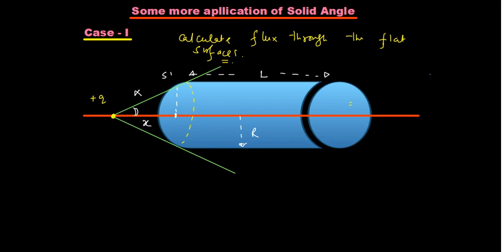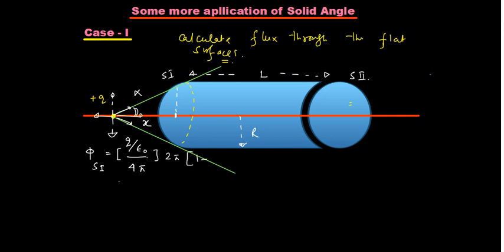This is surface 1 and this is surface 2 — I will come to surface 2 later. For surface 1, phi through S1 will be equal to total flux q/ε₀ divided by per unit solid angle 4π, multiplied by the solid angle subtended here, which is 2π(1 − cos α). So 2π and 4π cancel by 2, giving q/(2ε₀) × (1 − cos α).